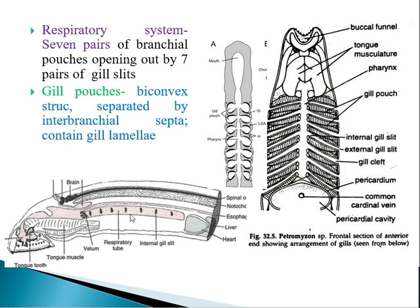Each gill pouch is a biconvex structure separated by interbranchial septa, which contain gill lamellae — plate-like gills. When water passes through the pouches, the gill lamellae are bathed in water, and exchange of oxygen and carbon dioxide occurs between the water and the blood capillaries in the gills.